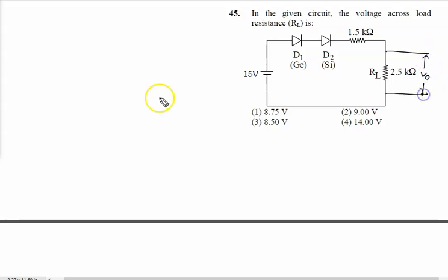First of all, we will draw the equivalent diagram. This is 15 volt. If it is a diode of germanium, then we all know very well that cutting voltage is 0.3 volt. Then silicon, again we know cutting voltage is 0.7 volt.